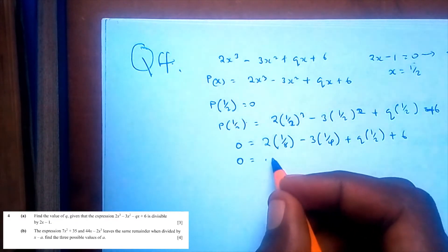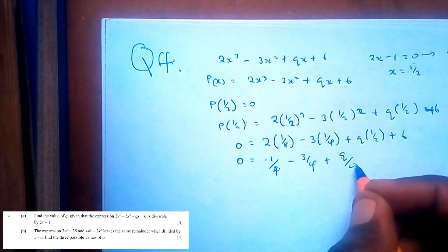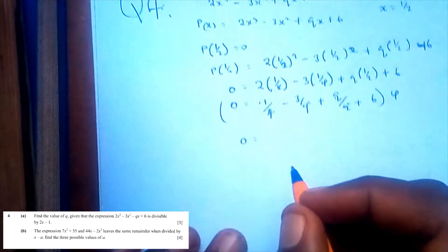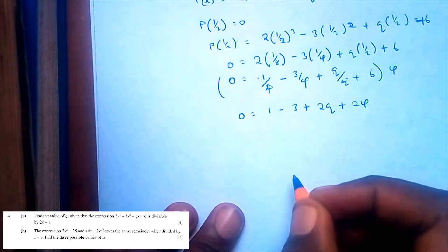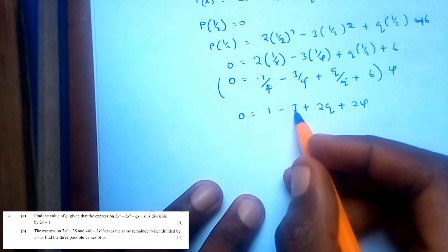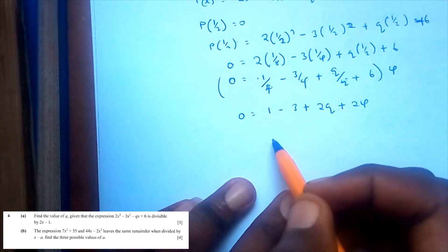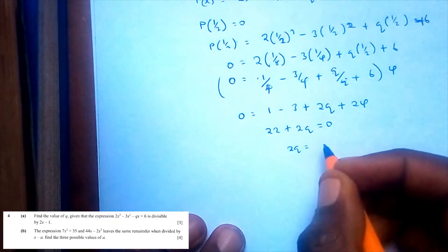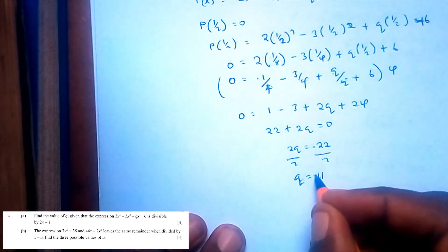So: 0 equals 2 times (1/8) minus 3 times (1/4) plus q/2 plus 6, which is 1/4 minus 3/4 plus q/2 plus 6. Multiplying through by 4: 0 equals 1 minus 3 plus 2q plus 24, so 22 plus 2q equals 0, meaning 2q equals negative 22, and q equals negative 11.